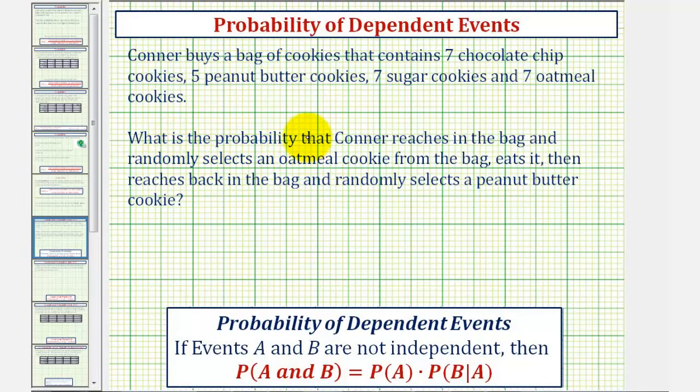What is the probability that Connor reaches in the bag and randomly selects an oatmeal cookie from the bag, eats it, then reaches back in the bag and randomly selects a peanut butter cookie?